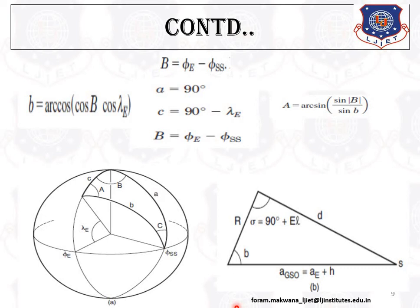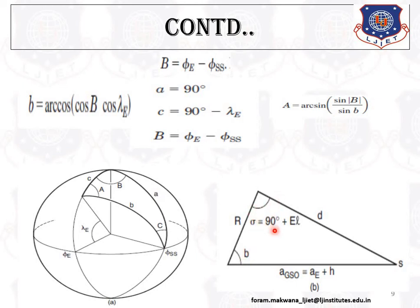Considering the plane triangle, we have the radius of the earth a_e, A_GSO stands for the radius of the geostationary orbit, and d stands for the distance between the satellite and the earth station. The angle small b and the angle 90 plus elevation angle will be discussed in the next session.